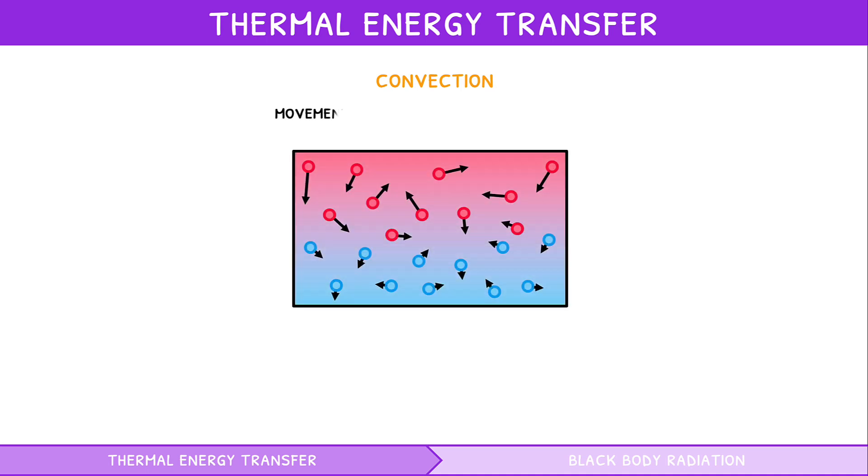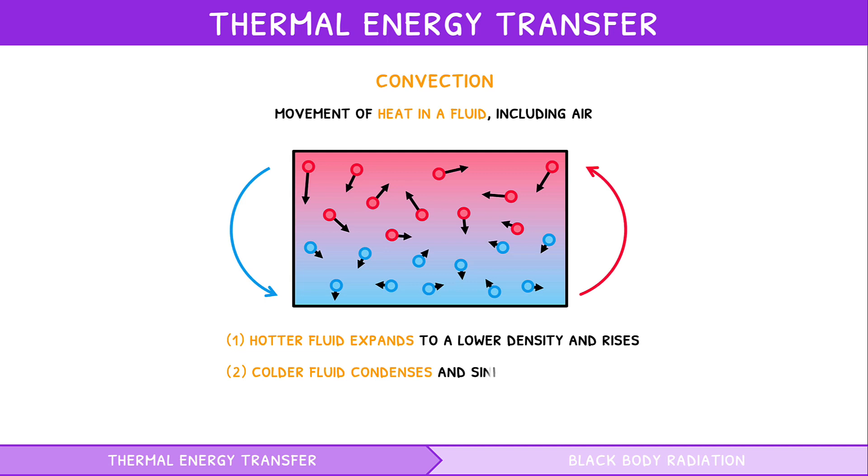Convection is the movement of heat in a fluid, including air. In this, hotter fluid expands at a lower density and thus rises, whereas colder fluid condenses to a higher density and thus sinks. This creates cyclical movement of fluid, called the convection current.